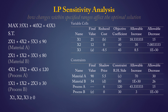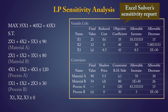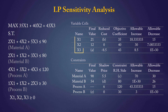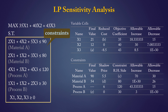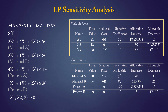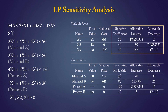We'll be answering questions based on this Excel solver sensitivity report of this LP model, where decision variables x1, x2, x3 represent the number of units of products 1, 2, and 3 to produce. The objective function represents total profit, and the model is subject to these constraints. The variable cells table deals with optimality ranges — ranges over which the objective function coefficients could vary without changing the decision variable values in the current optimal solution.